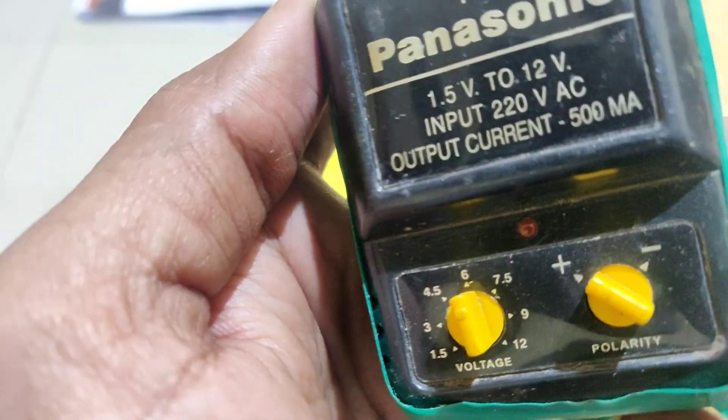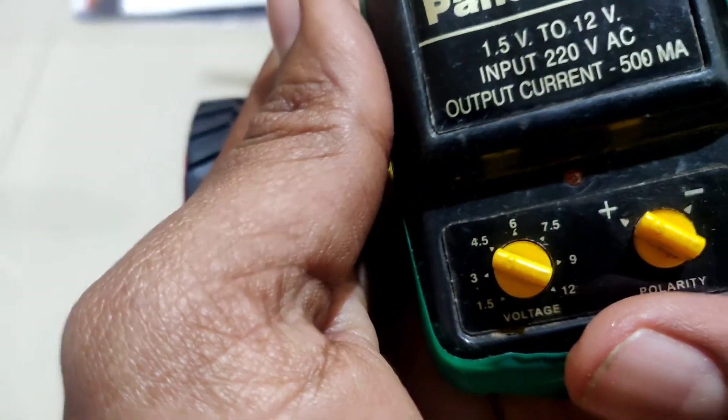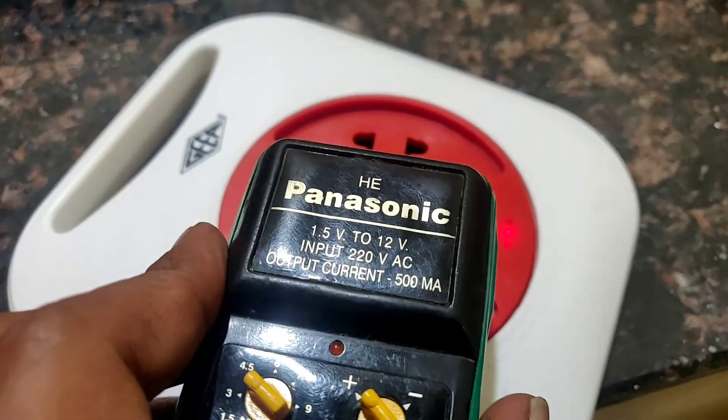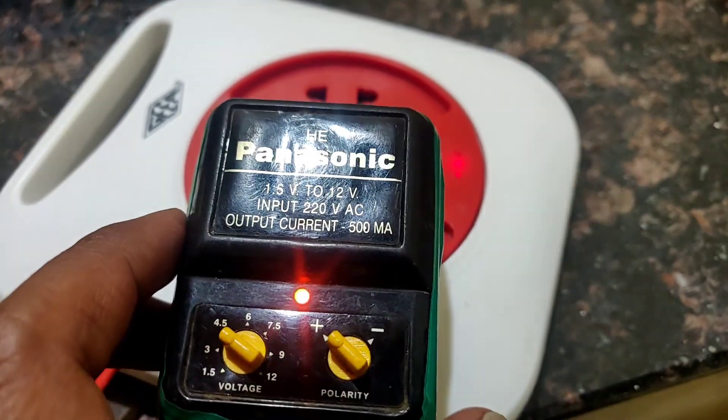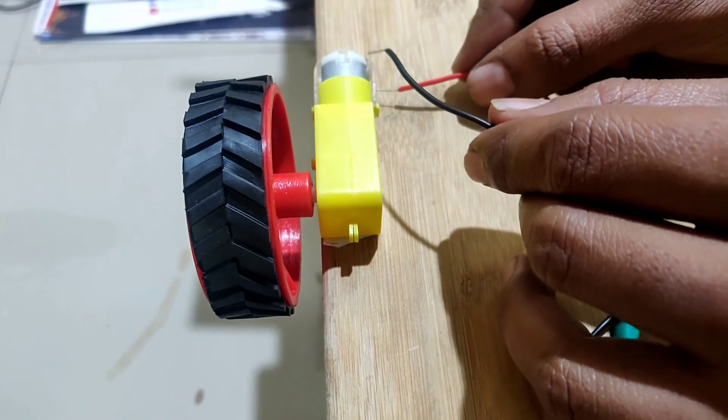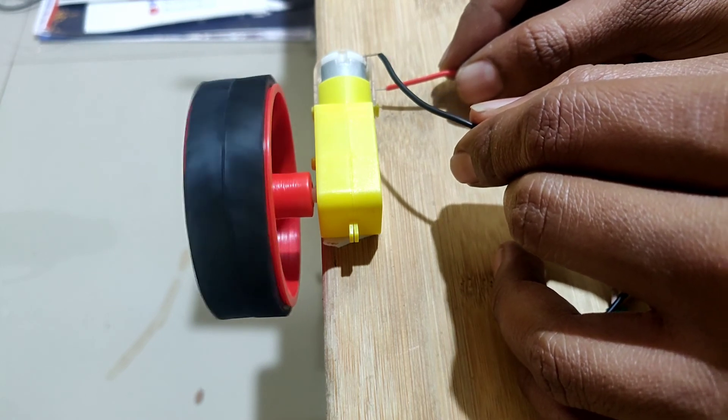Let's see, here I am giving a 4.5V DC supply. Here I am connecting the wires in this way. The wheel is rotating in anti-clockwise direction.